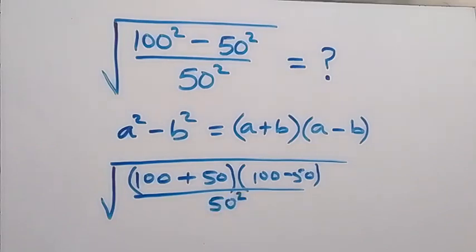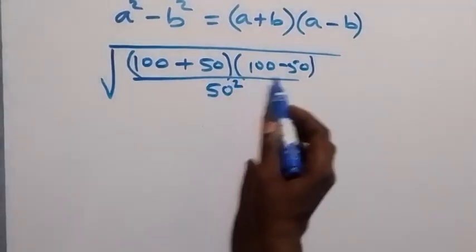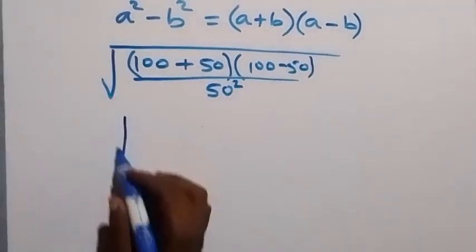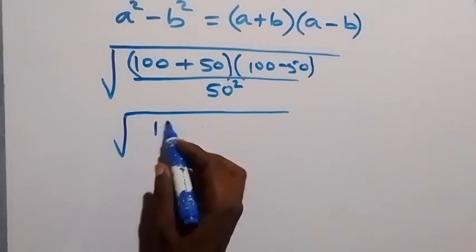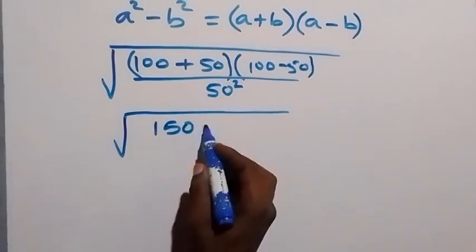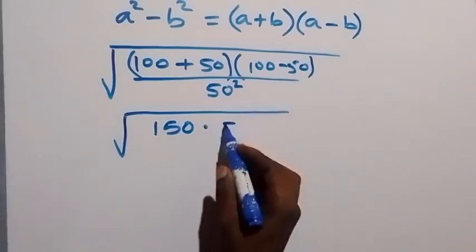Then in the next step, we can rewrite this, summing and subtracting. So this will be square root of 100 plus 50, that's 150, times 100 minus 50, that's 50.